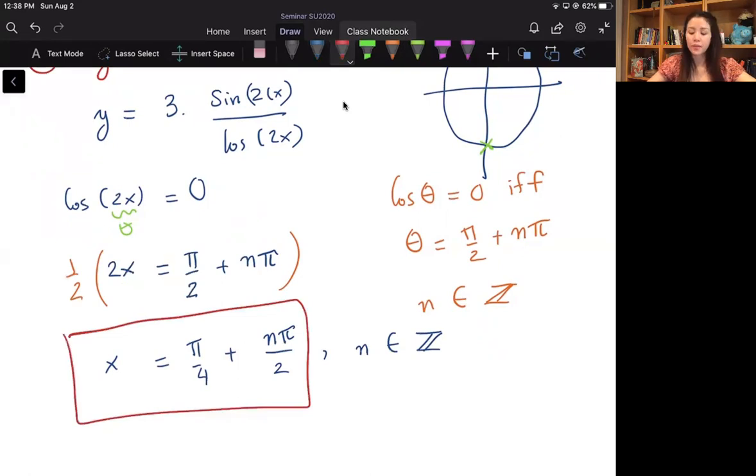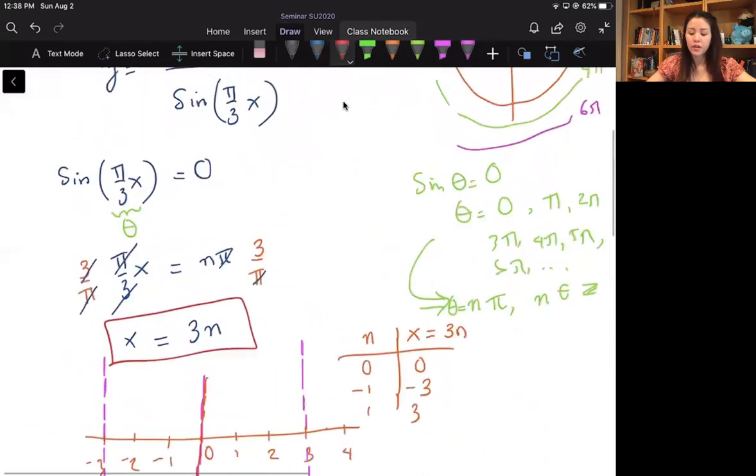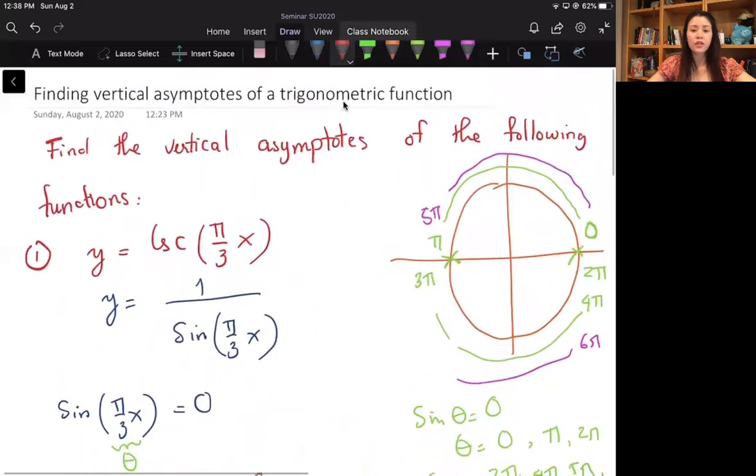And that's how we find the vertical asymptote of a trigonometry function.